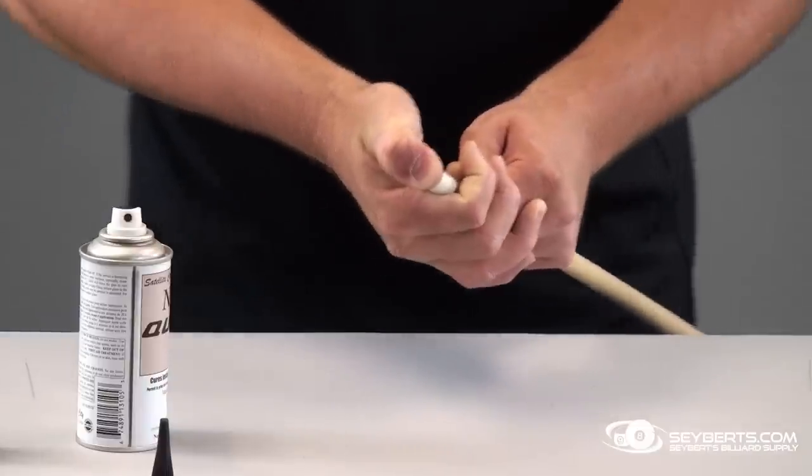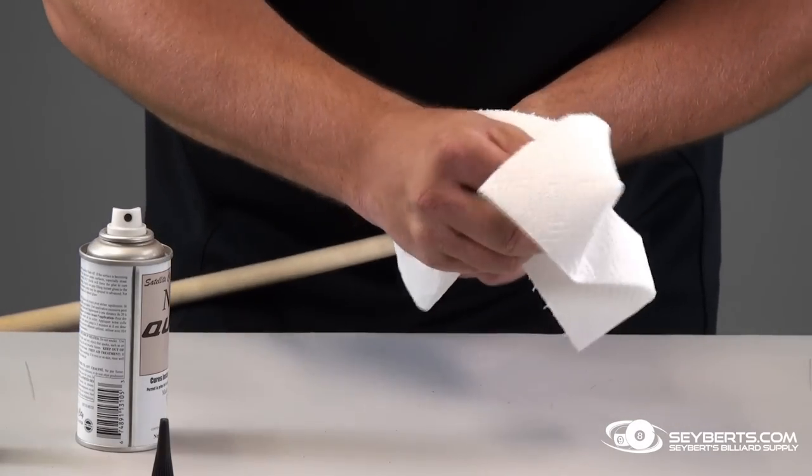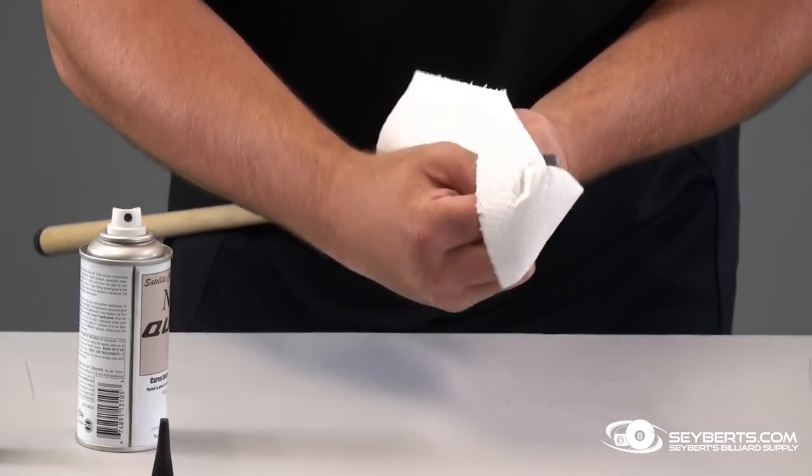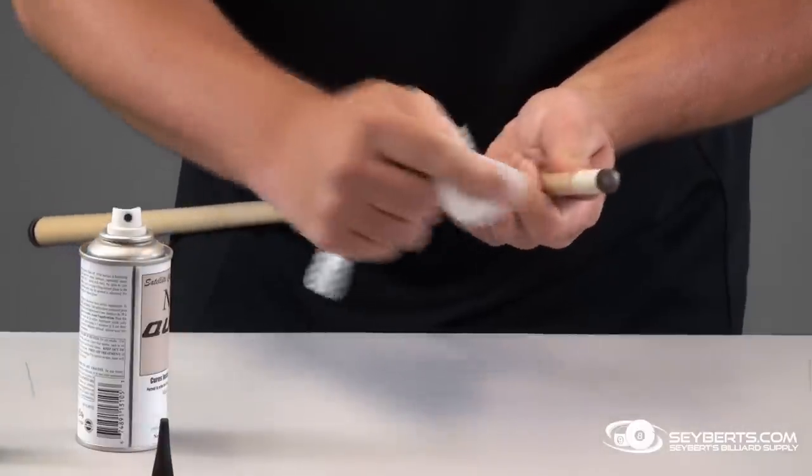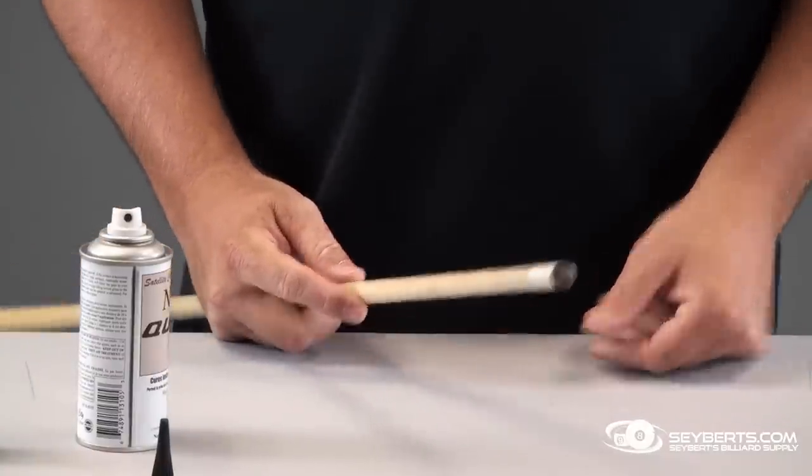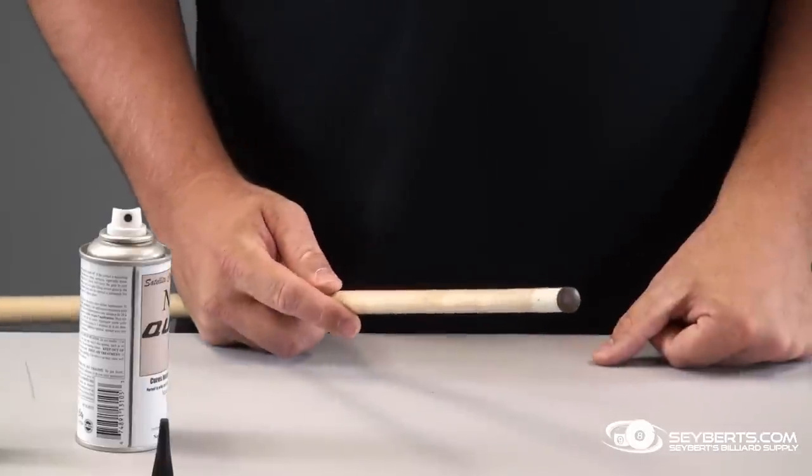And that tip is glued. Now what we want to do is come back with a paper towel or something. You're going to have some glue where it comes out - just wipe it up so it goes back up into the tip. That gets any residue glue off the ferrule, and you end up with a real clean job. Now you're prepared to trim the tip to get it ready.